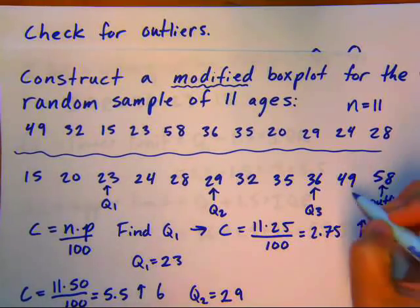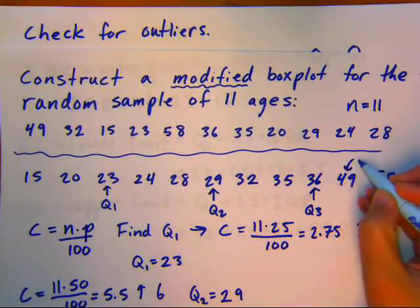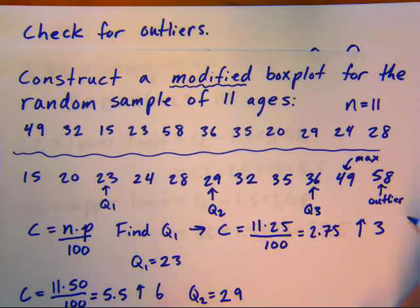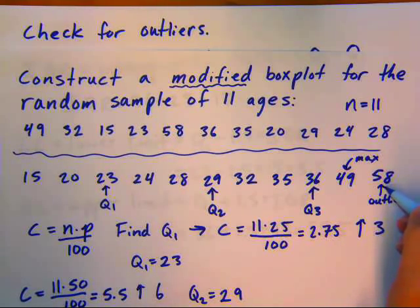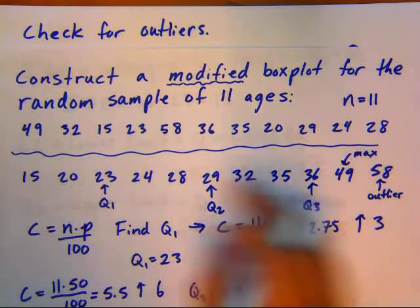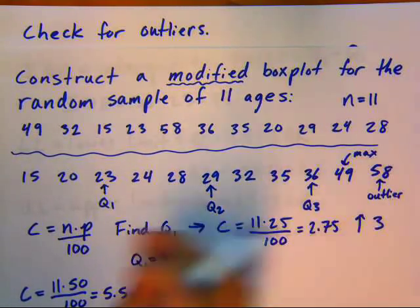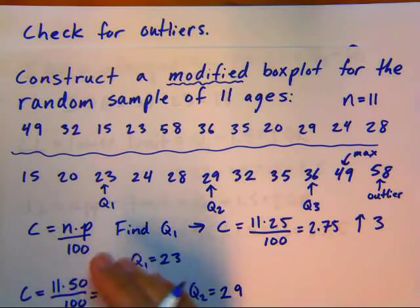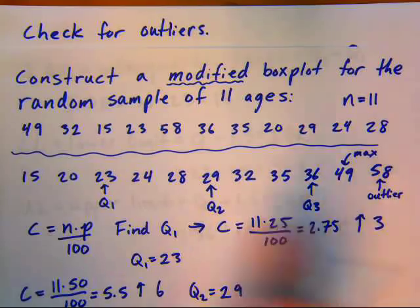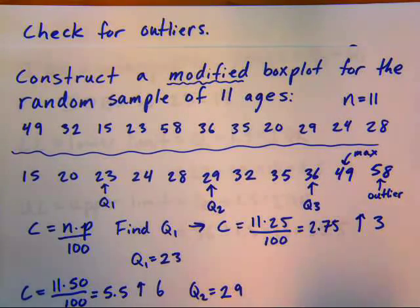And what's going to happen then is that we're going to have this new value here as the max excluding our outliers. And our whisker will only go to 49 instead of up to 58. Sometimes you can have multiple outliers. You might have one on either side or maybe two or three on one side and only one on the other side. You just mark each one with an asterisk. And after you take out all the outliers, the next largest or next smallest value excluding outliers would be your min and max.